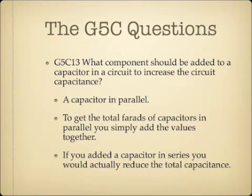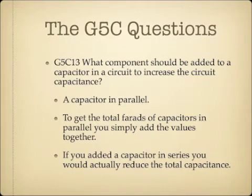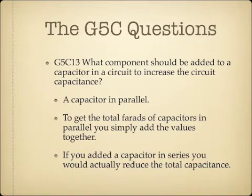What component should be added to a capacitor in a circuit to increase the circuit capacitance? You want to add a capacitor in parallel. For capacitors in parallel, to get total capacitance you simply add them together — just like resistance in series. If you were to put a capacitor in series instead, you would actually reduce the total capacitance of the circuit mathematically. So to increase the capacitance of a circuit, the component you add is a capacitor in parallel.